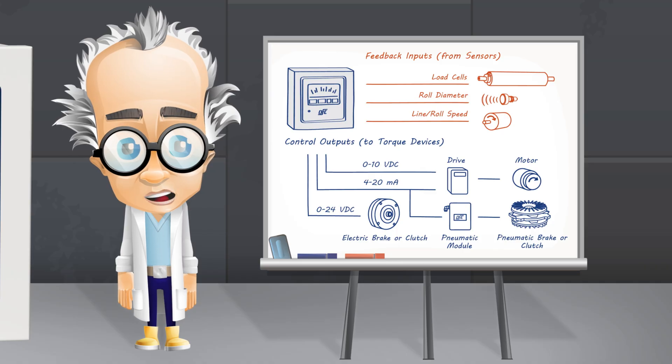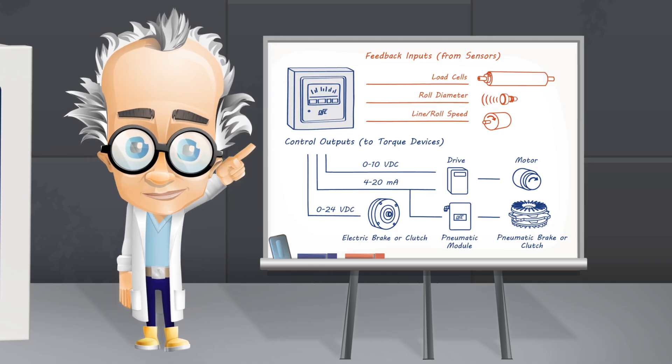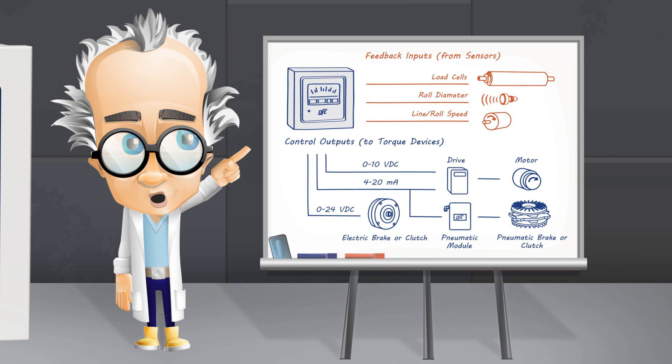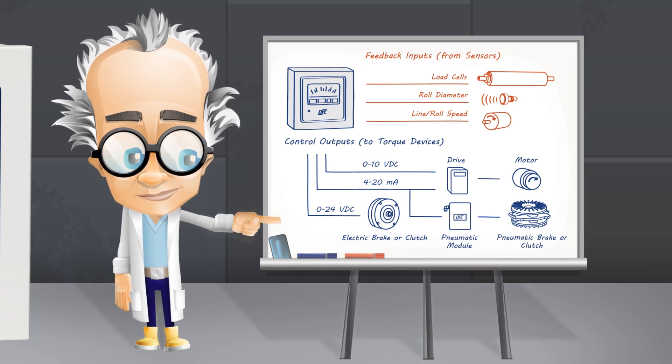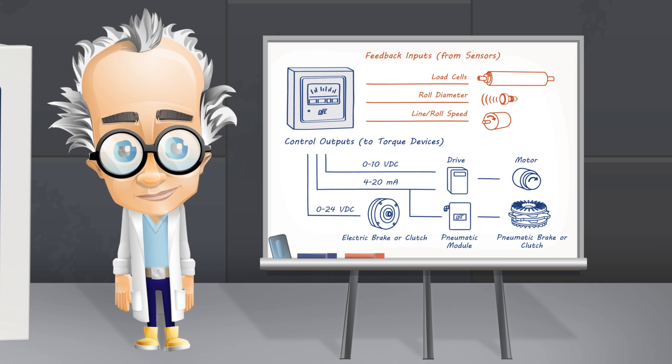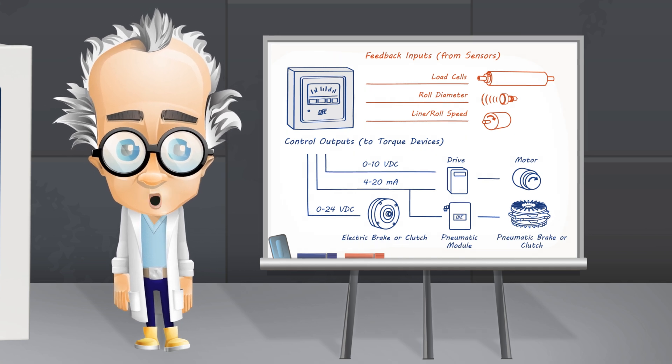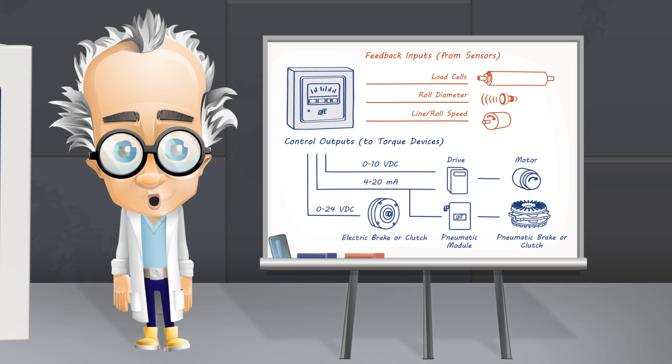The user selected set point is maintained by measuring web tension from a load cell and then sending a compensating signal to a tensioning device such as a pneumatic brake, clutch, or motor drive. The controller may be used in unwind, rewind, and intermediate tension zones.